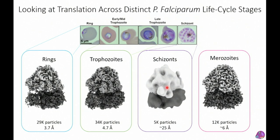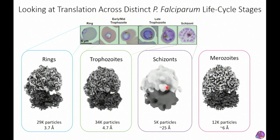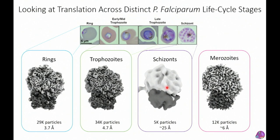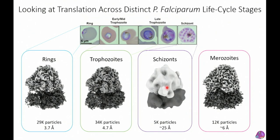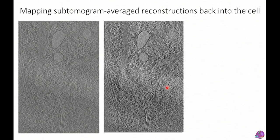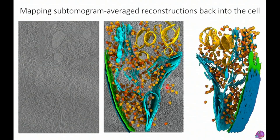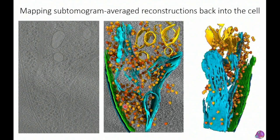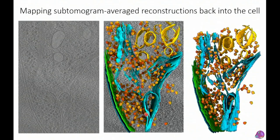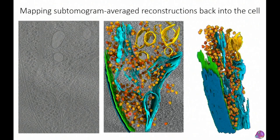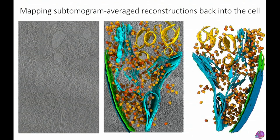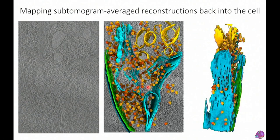The key power is that we know the X, Y, Z coordinates of every ribosome in the original 3D volume. We can take the high-resolution structure and map it back into the original tomogram alongside the segmentation. Now you can see all ribosomes within their cellular context — exactly where they are, which ones are interacting with membranes, and how they're distributed in the cell.